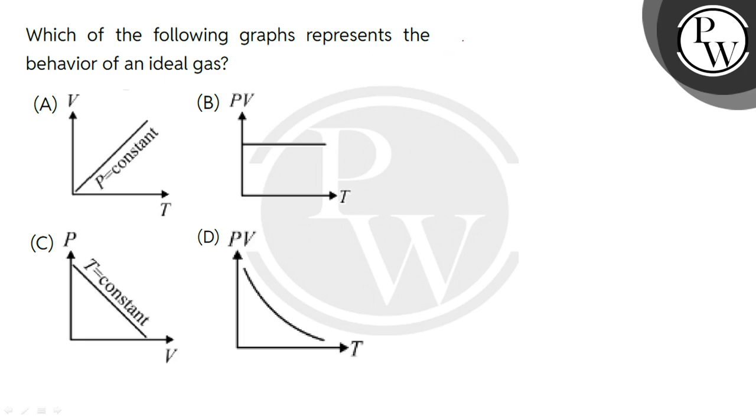We know that PV equals nRT, where P is the pressure, V is the volume, n is the number of moles, R is the gas constant, and T is the temperature.